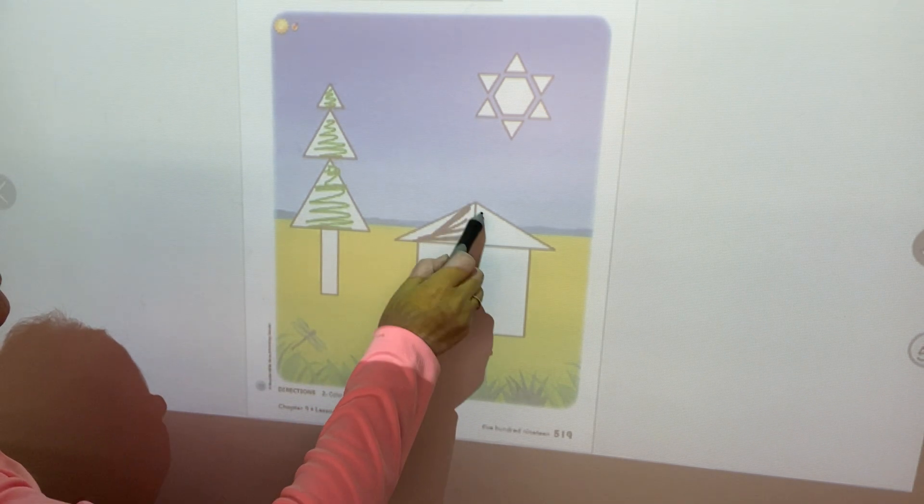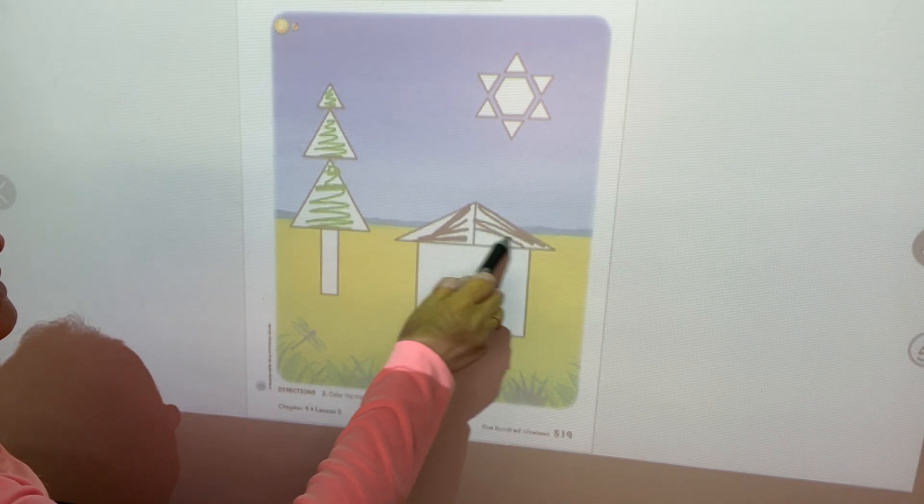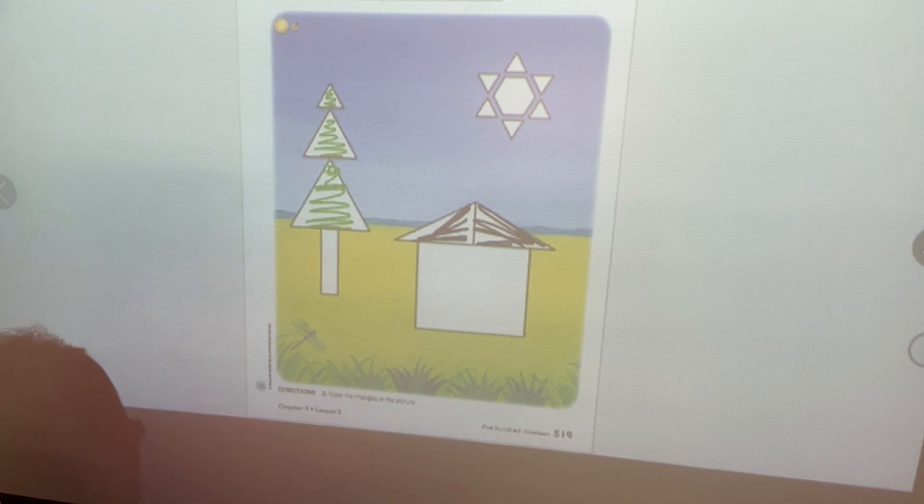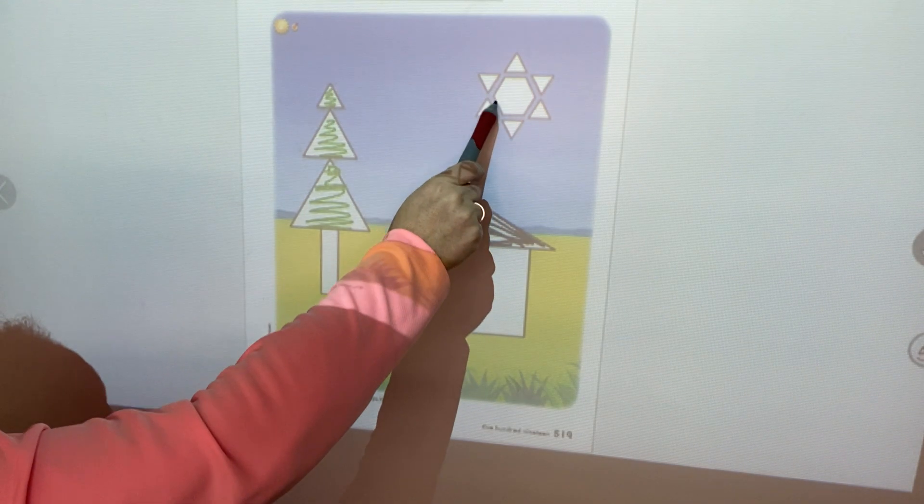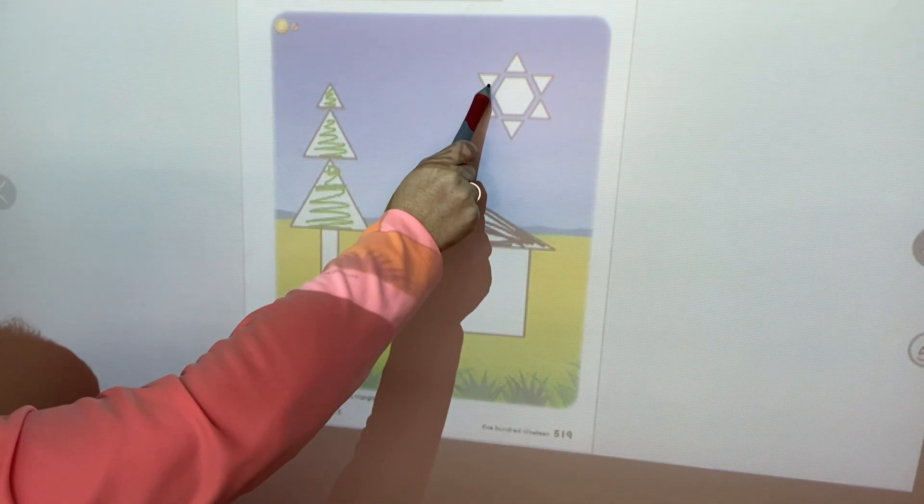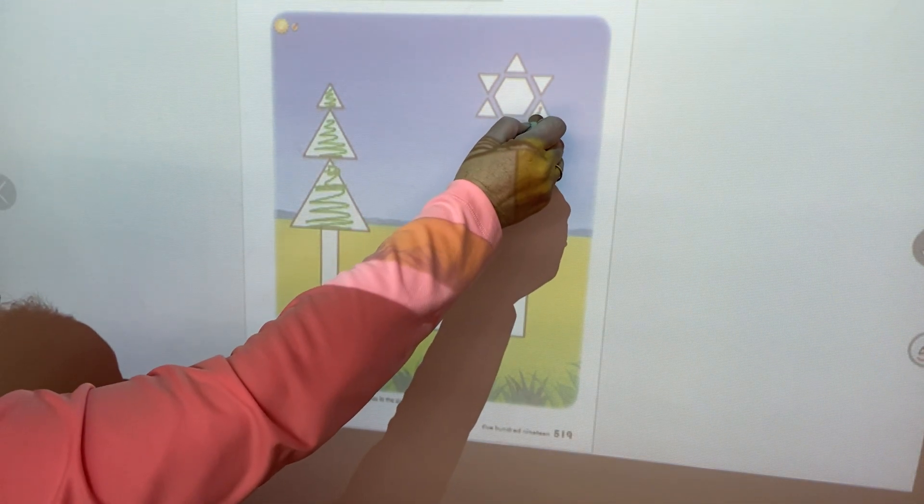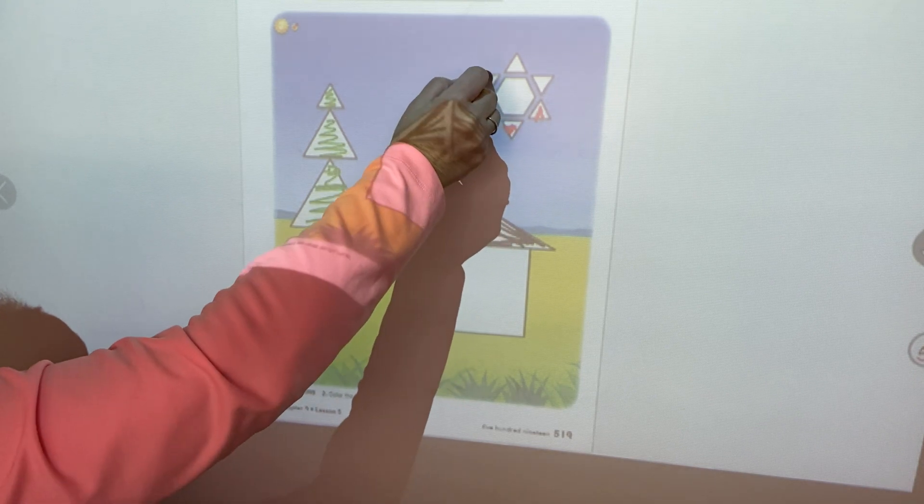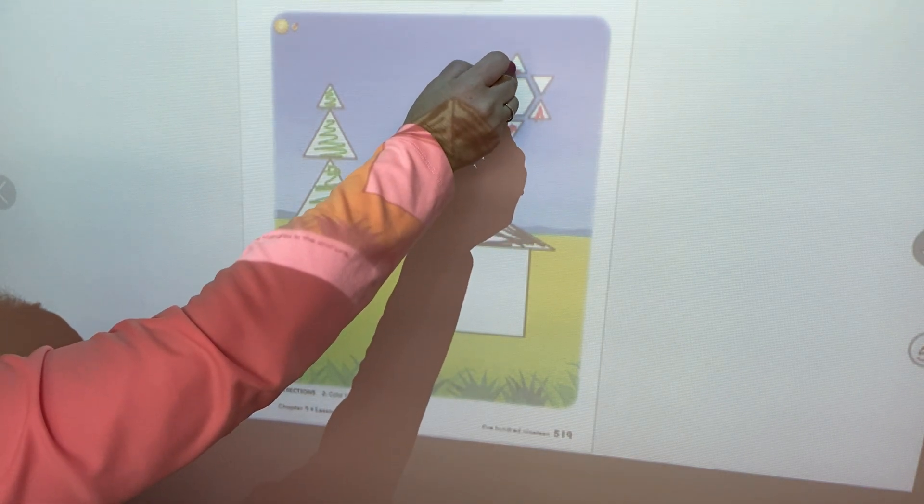The roof has two triangles on it, but the bottom, the house part is a square. If you go up to the sun, that is a hexagon, but those little pieces around the outside, those are all triangles. So go ahead and color those in too.